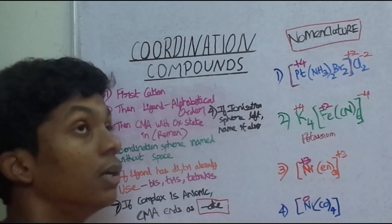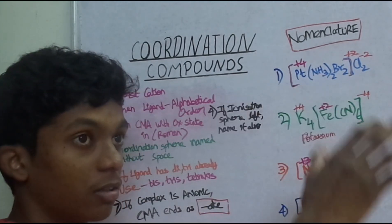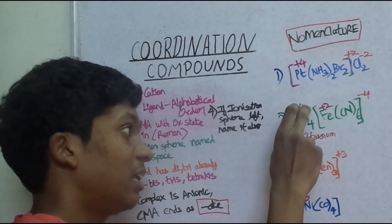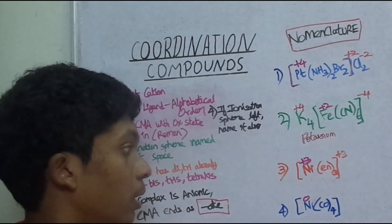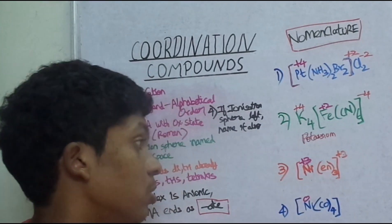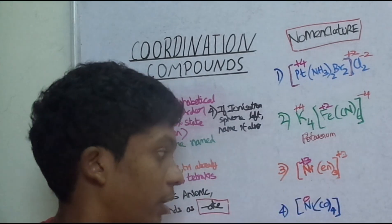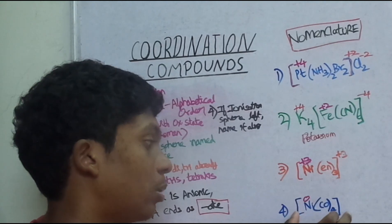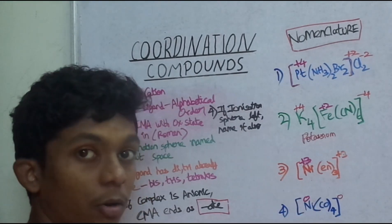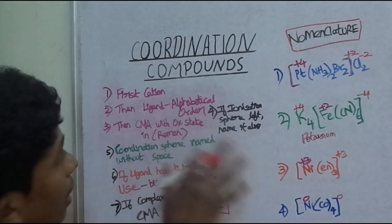What name is the cation? It's a complex cation. If you have the complex cation, the naming is different. If there is no cation — meaning it is neutral, with a charge of 0 — then you can write it as one name.